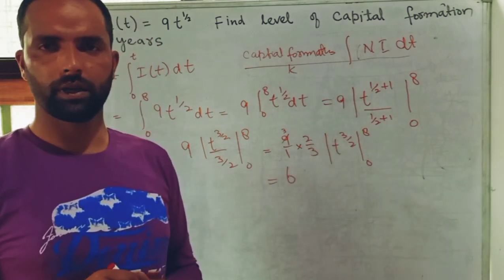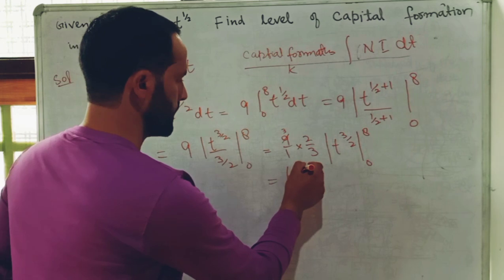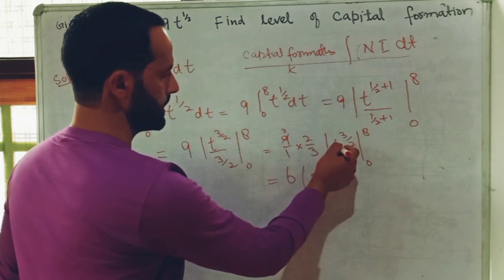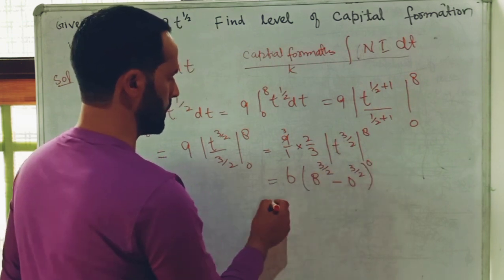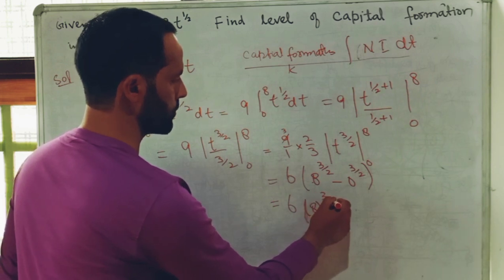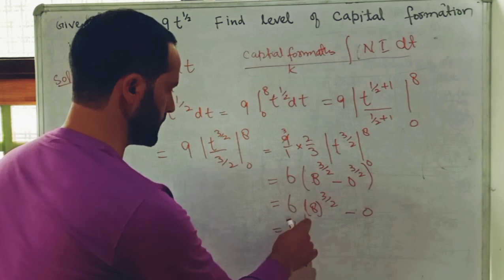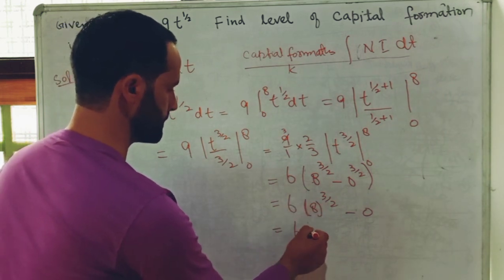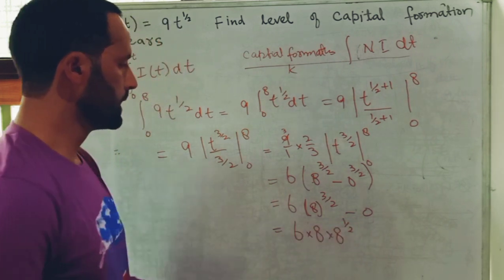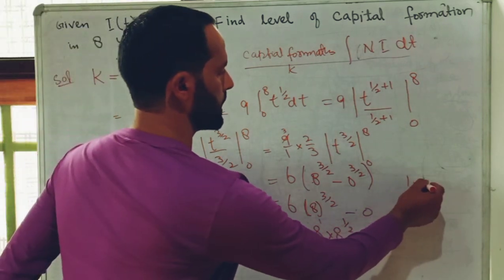We evaluate 6t^(3/2) from the upper limit 8 and subtract it evaluated at the lower limit 0. In place of t we write 8, giving 8^(3/2), and from this we subtract 0^(3/2). Since 0 raised to any power is 0, this becomes 6 · 8^(3/2) minus 0, which is 6 · 8^(3/2).